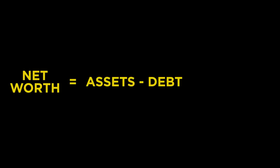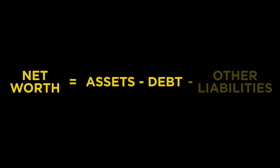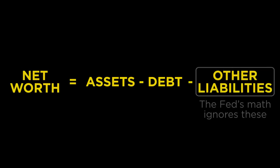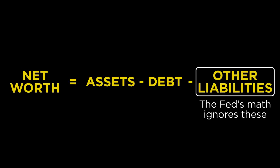The second and bigger oversight is that the Fed mysteriously does not offset the net worth of the nation by the general liabilities of the federal and state governments or private corporations. Wouldn't it make sense for the Fed to offset these against household wealth? So let's look at these under- and even unfunded liabilities.